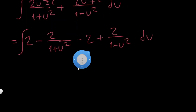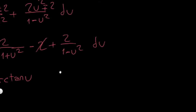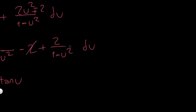I can cancel the twos. I know that the integral of 1 over (1 + u squared) is arctangent of u, so this part gives minus 2 arctangent of u. That's one of the most elementary integrals. For the integral of 1 over (1 minus u squared), it's not as obvious — you may not know it by heart.